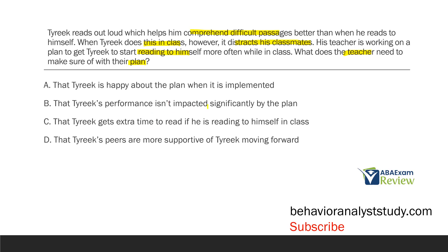Answer B: that Tariq's performance isn't impacted significantly by the plan. She needs to be really careful about this. When you decrease or change a behavior — in this case she's changing Tariq reading out loud — you've got to remember that behavior is happening for a reason. In this case, it's helping Tariq comprehend the passages better. So if the teacher is going to decrease that behavior, she's got to be sure she's not reducing Tariq's ability to comprehend and perform. We have to be very smart that when we change behavior, we're replacing it with something that allows the learner to accomplish the same goal.